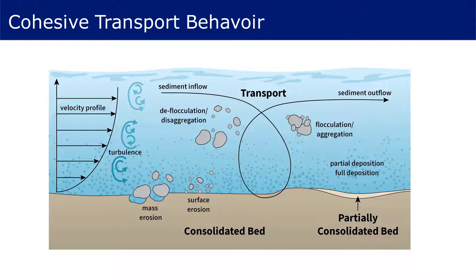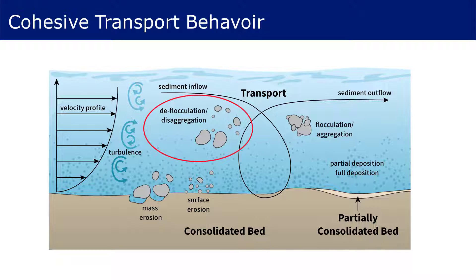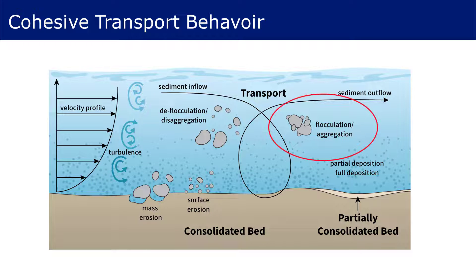Then, as shear stress increases, mass erosion occurs, where failures occur in the consolidated surface and large chunks of material are eroded at once. Once lifted into the water column, turbulent forces mix the material, causing both further segregation of larger groups and aggregation of smaller groups. The concentration of material in the water column influences this behavior.